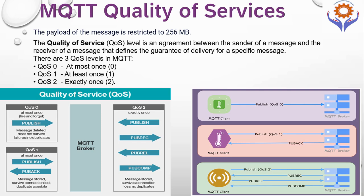For quality of service 1, it gives a guarantee that the message is delivered at least one time to the receiver. The receiver stores the message until it sends back an acknowledgment packet, so you can confirm it has been received. For quality of service 2, it is the highest level of service in MQTT. This level guarantees each message is received exactly once by the intended receiver, with at least two request-and-response flows and a four-step handshake between senders and receivers.